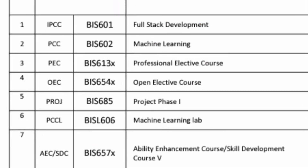Moving to the sixth semester — full stack development is there, same as in CSE. Machine learning is here as well (called AIML in CSE, and machine learning here). There are professional elective courses and open elective courses, both available here as well. Then there is project phase one and a machine learning lab, and the overall structure is similar to CSE.